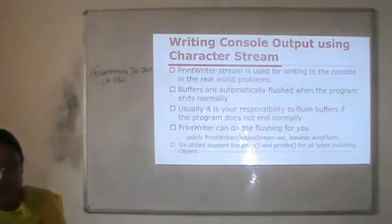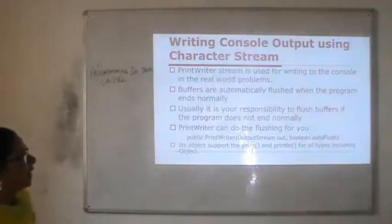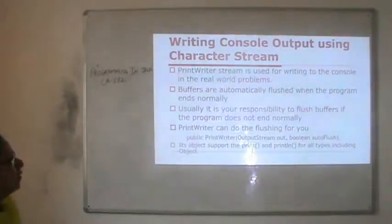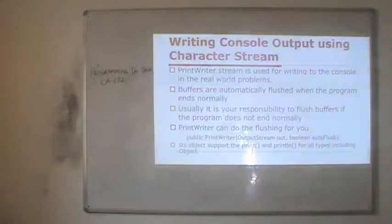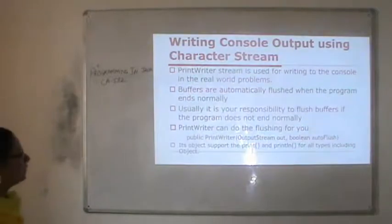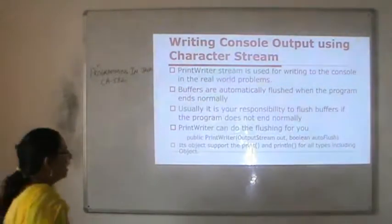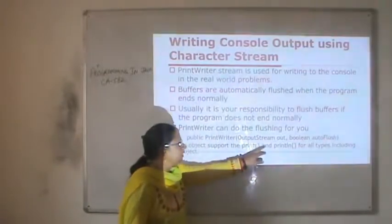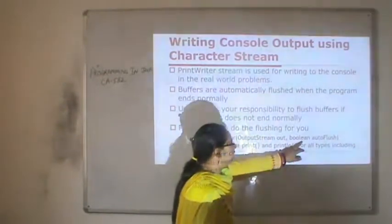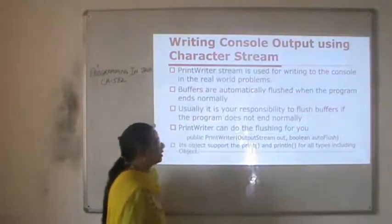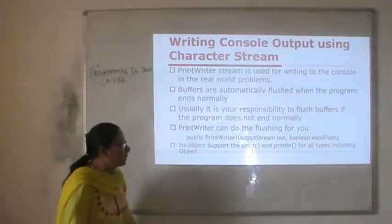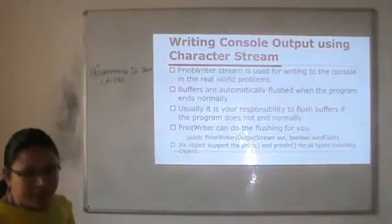Writing console output using character streams: PrintWriter is the class used for writing to the console in real-world problems. Buffers are automatically flushed when the program ends normally. If the program does not end normally, it is your responsibility to flush the buffers. The PrintWriter class can do flushing automatically — its constructor takes an object of OutputStream and a boolean for auto-flush. Its object supports print and println methods for all types including Object.